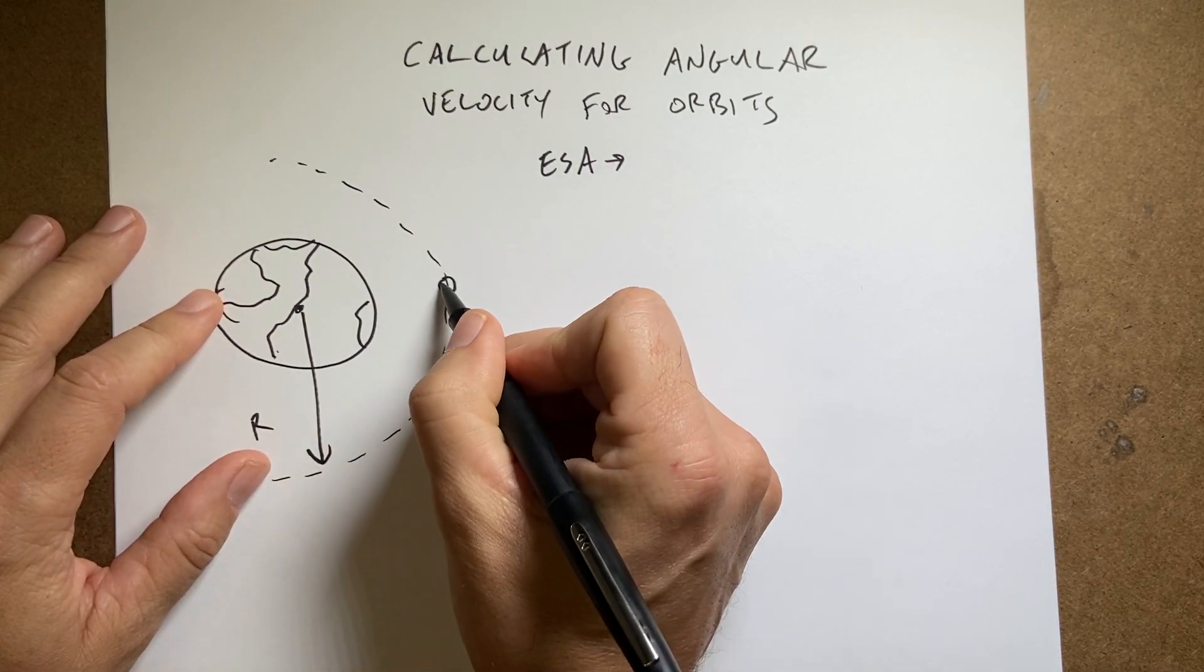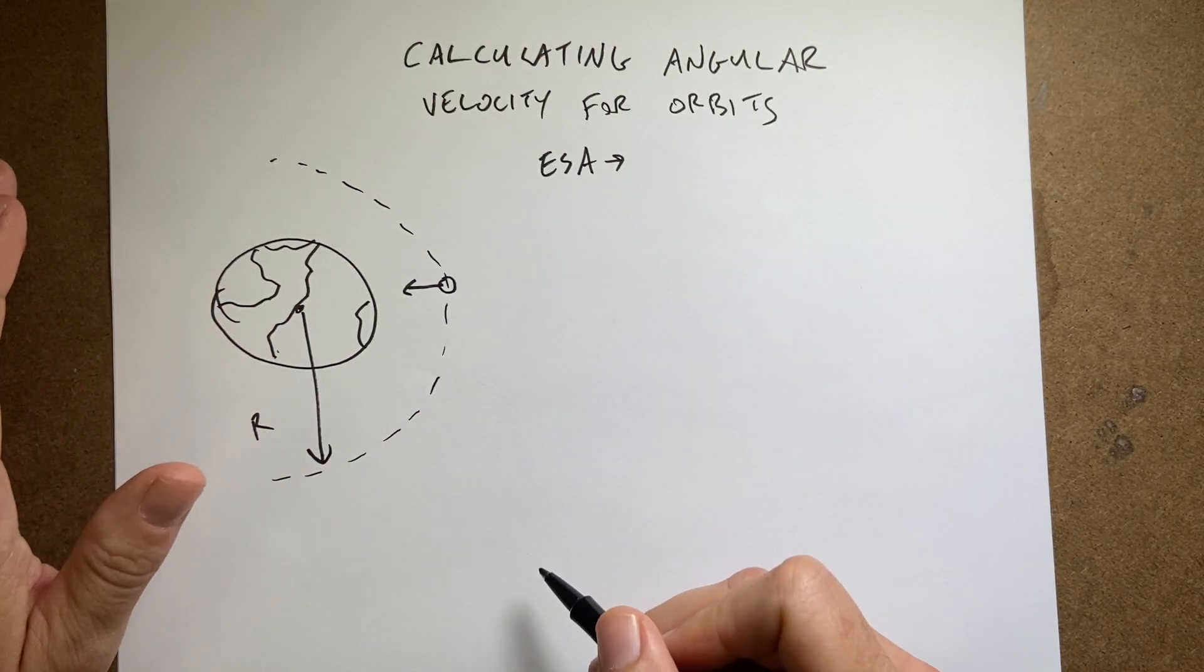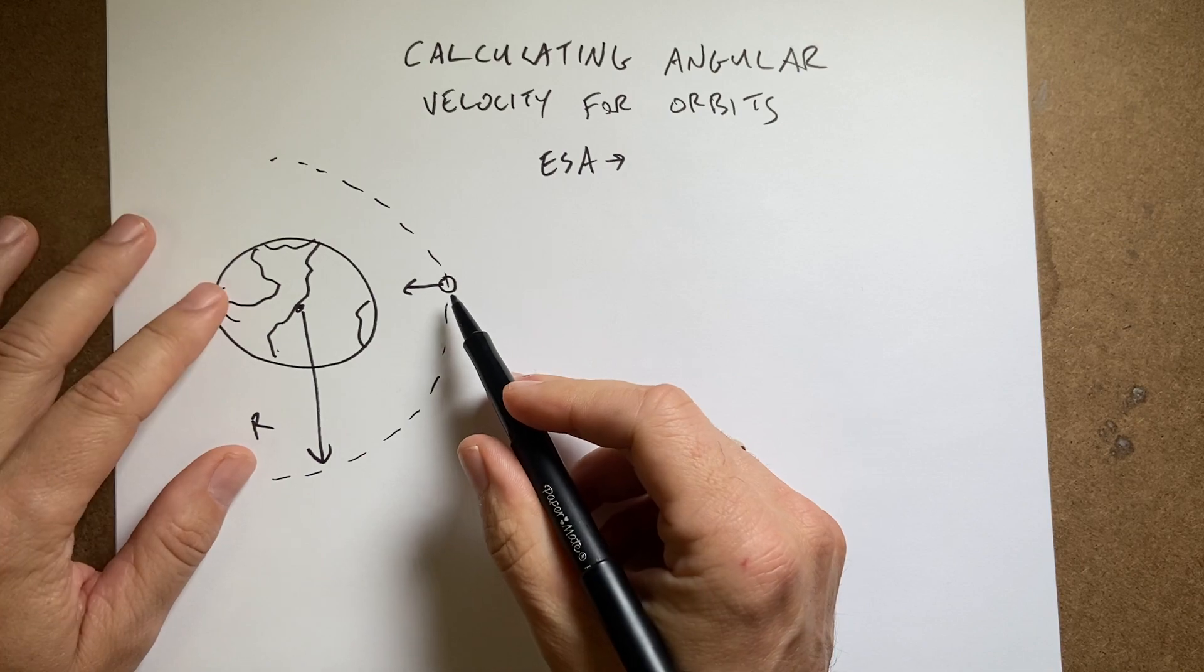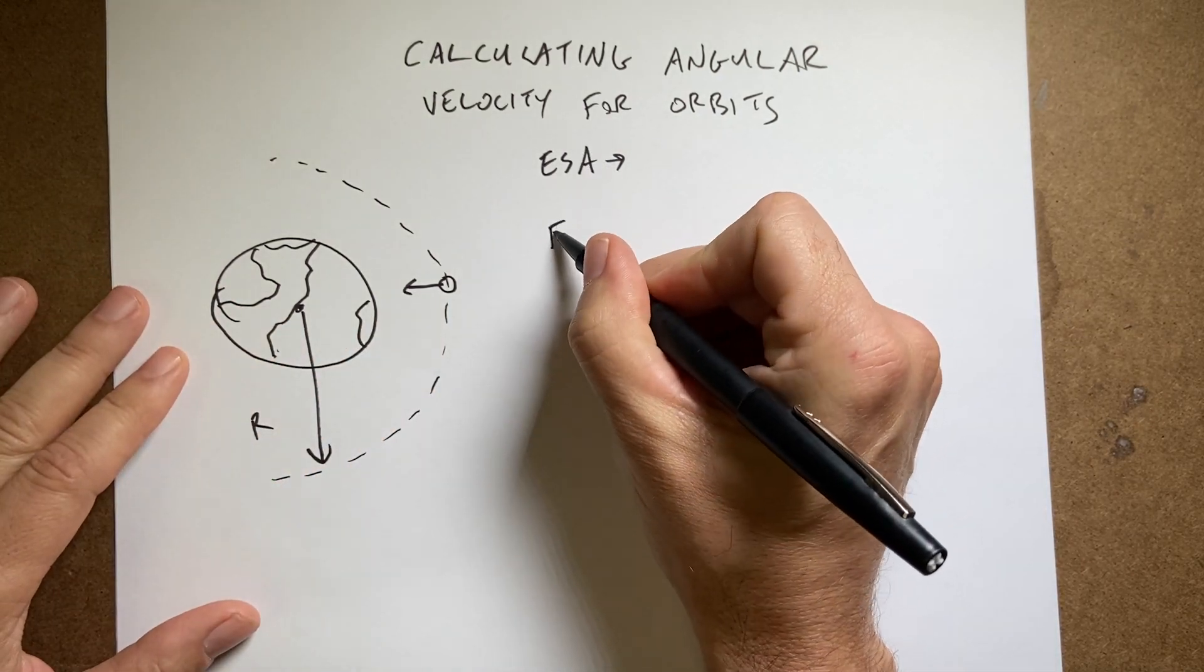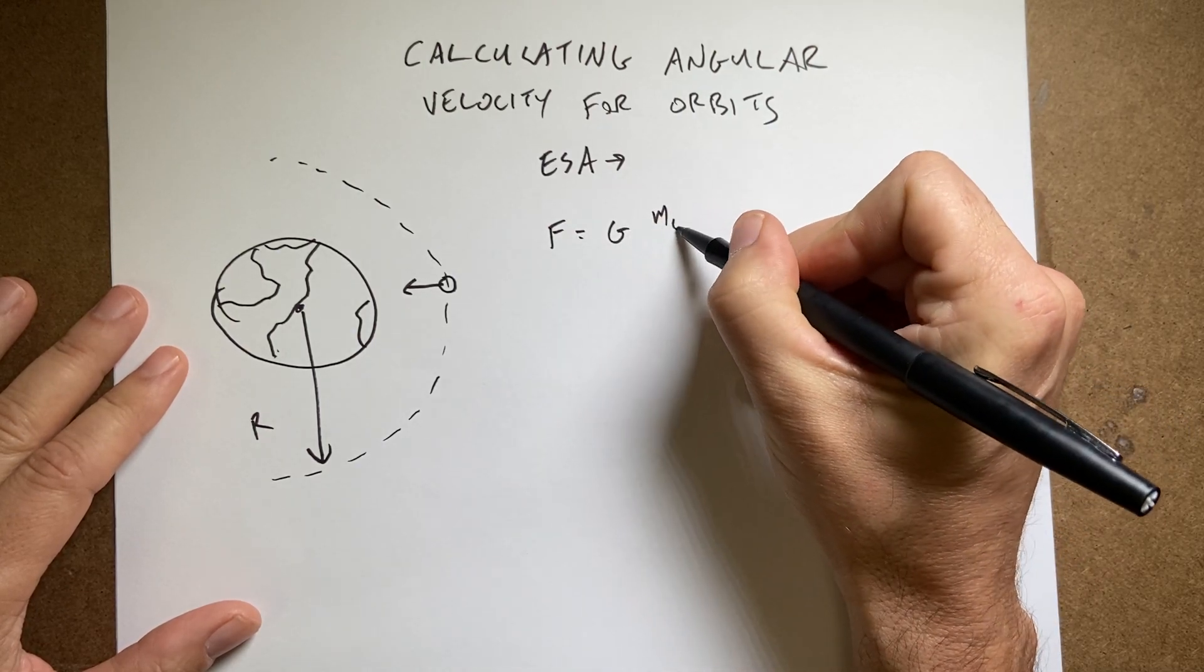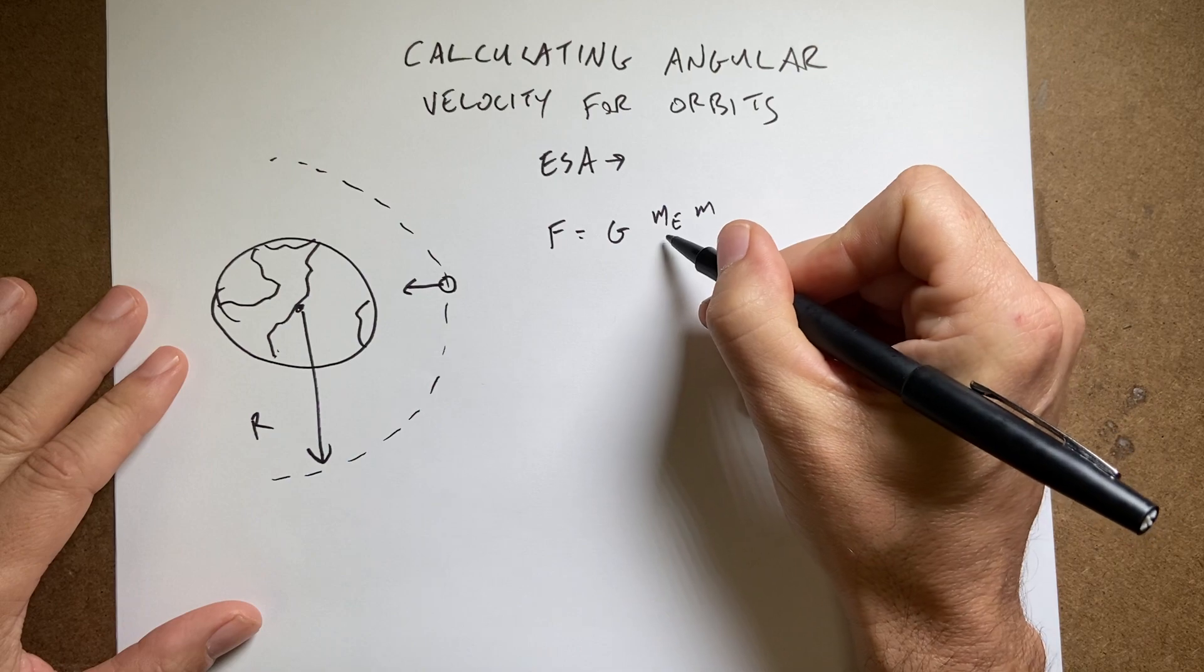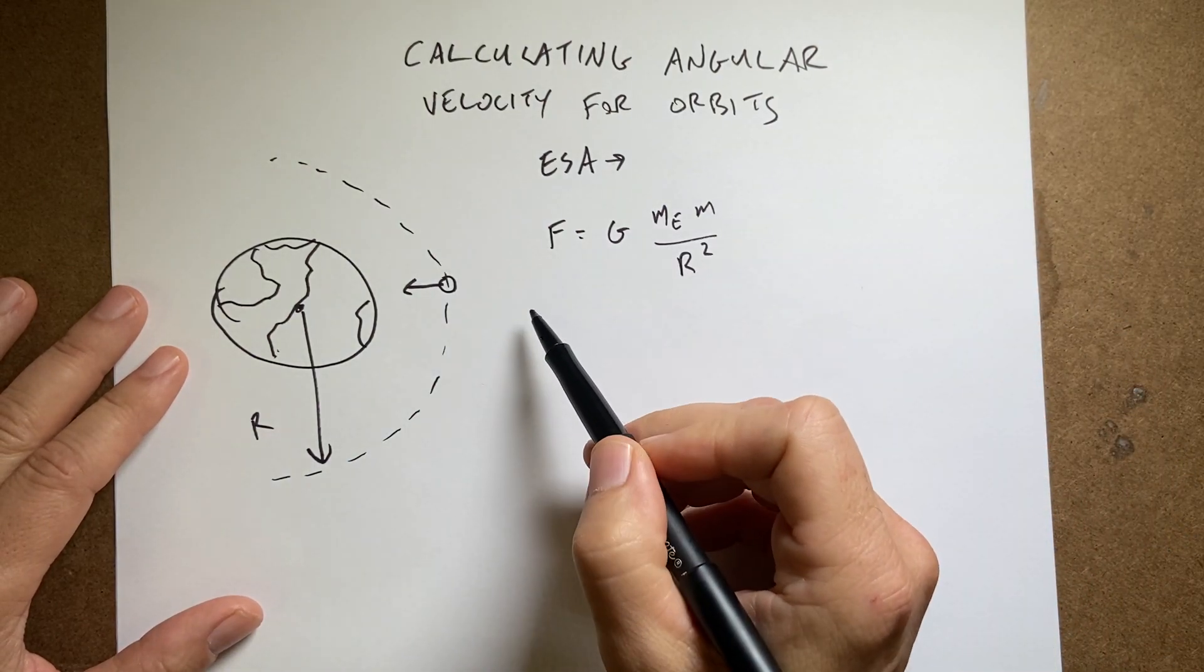So the first thing is, there is a gravitational force acting on the spacecraft, or satellite, pulling it towards the center of the Earth. And the magnitude of that force, it's a gravitational interaction, is going to be F equals G mass of the Earth mass of the object over r squared. This is the universal gravitational force.